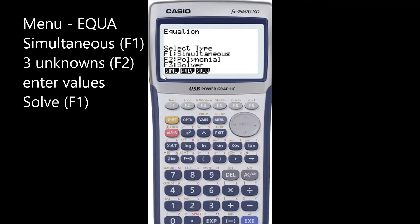Once you get there you will need to select simultaneous, and the way we can do that is by pressing F1. Here we are solving systems of linear equations with three unknowns.